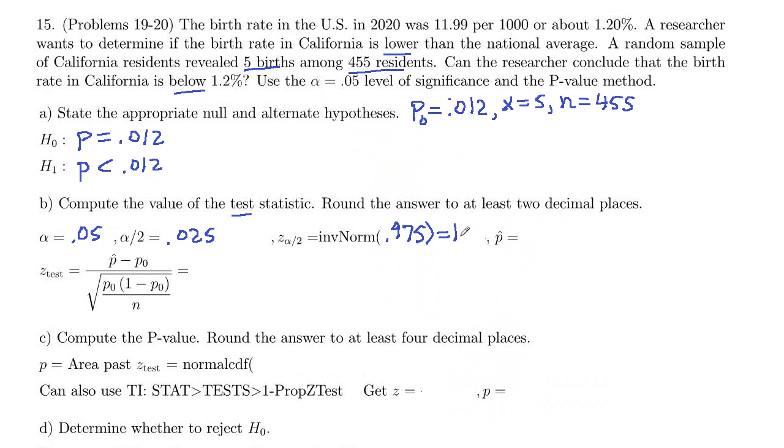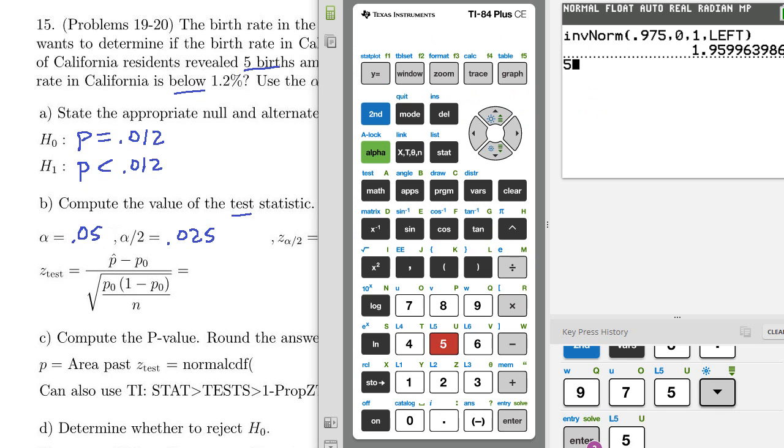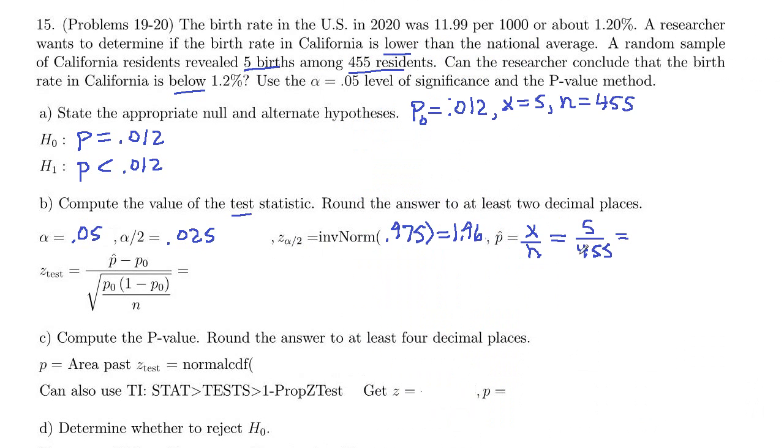Our p-hat is x over n. So our x was 5 births out of 455 total. And 5 divided by 455 is 0.01098. So if you wanted, you could do 0.011 approximately, because this would round up to 0.011.